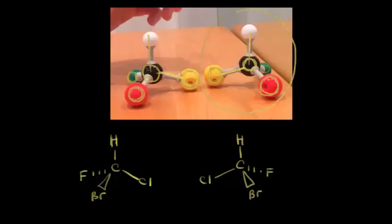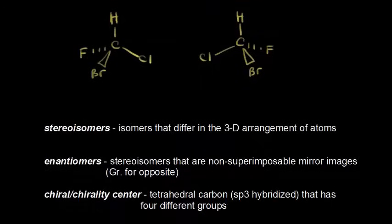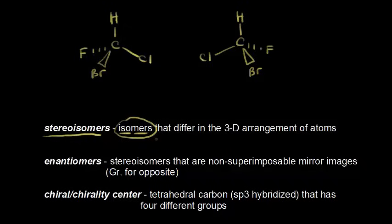Let's use these images to talk about three definitions. We'll start with stereoisomers. Stereoisomers are isomers that differ in the three-dimensional arrangement of atoms. The word 'isomer' means 'same parts,' so these two molecules are composed of the same parts — each contains one carbon, one hydrogen, one fluorine, one bromine, and one chlorine.